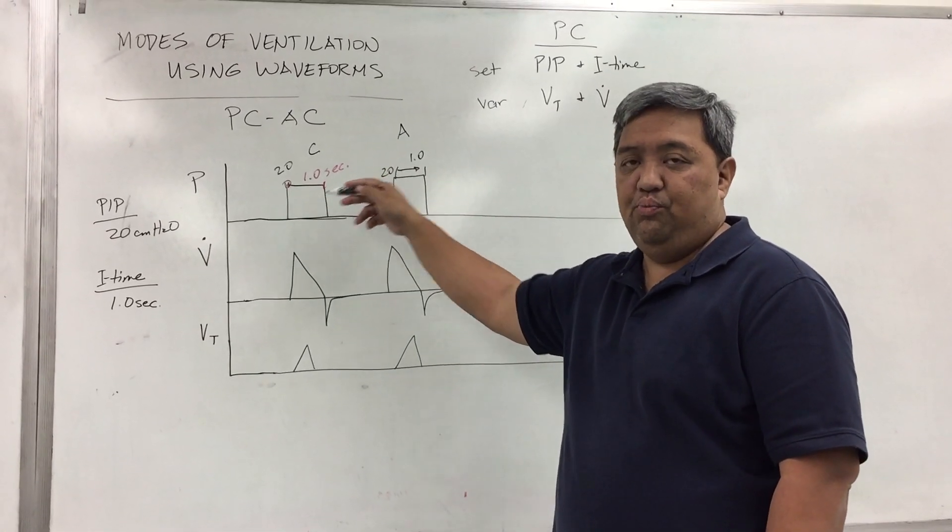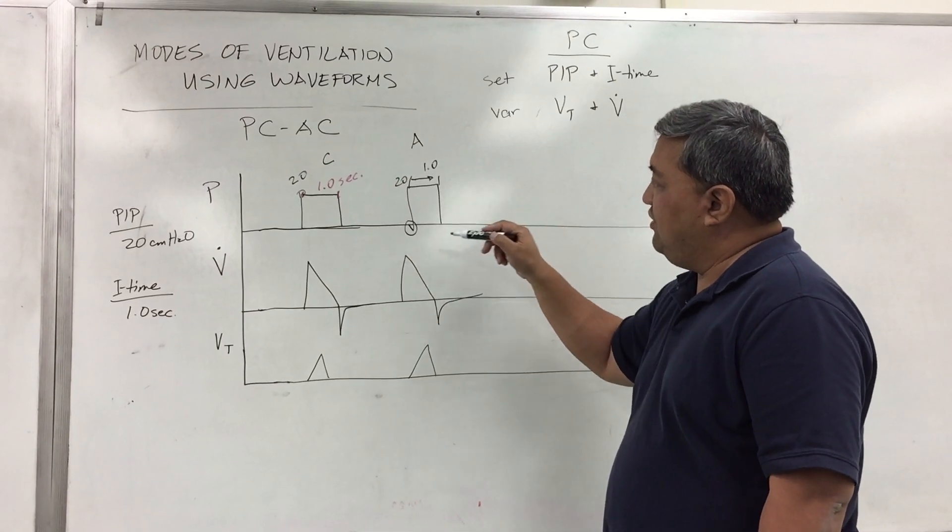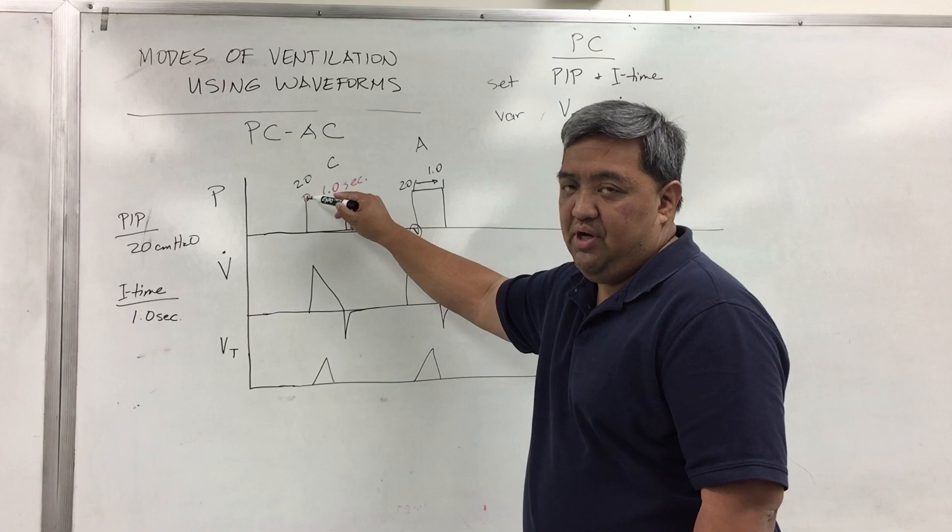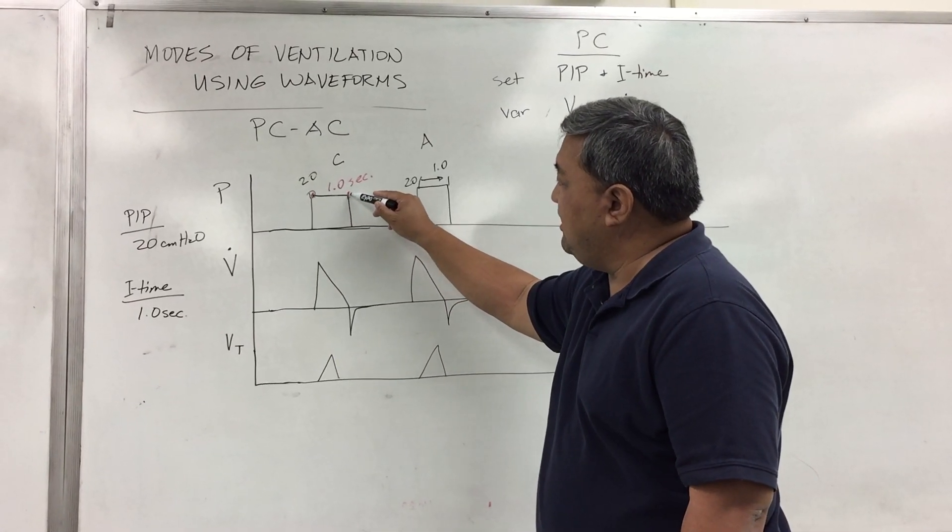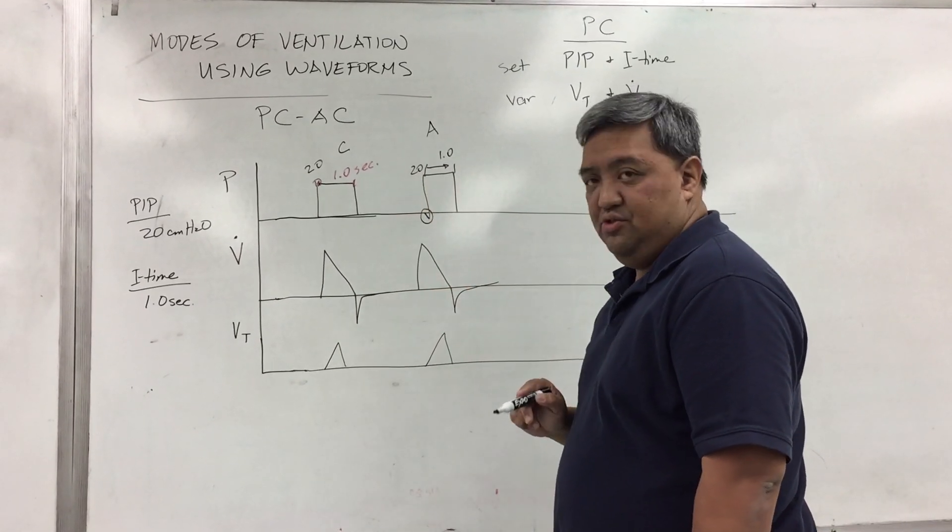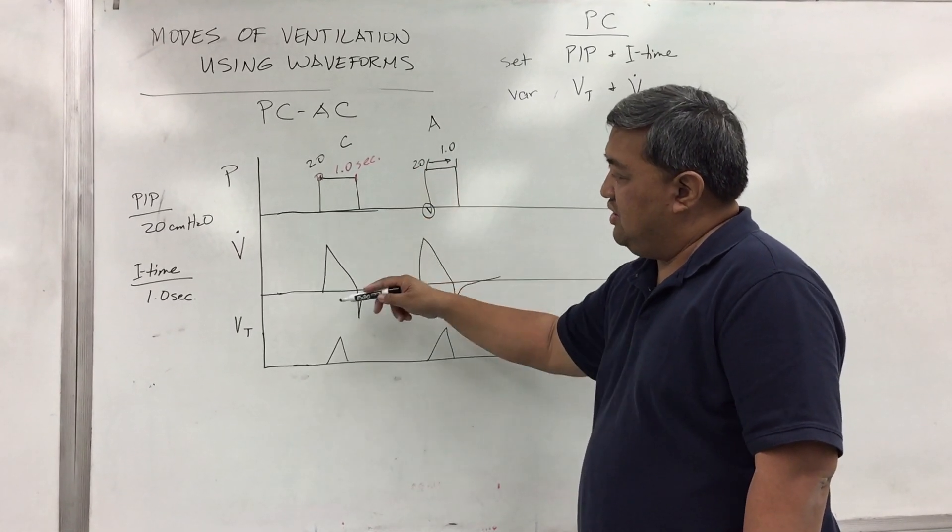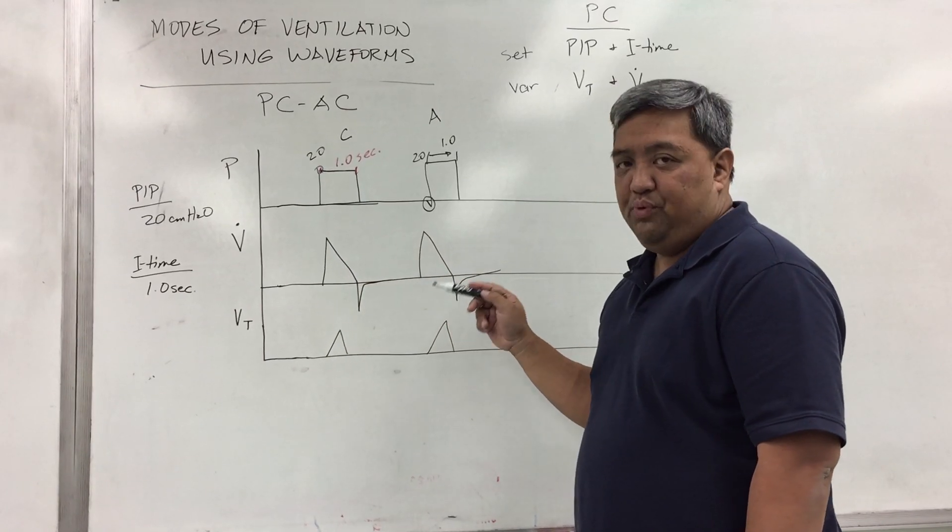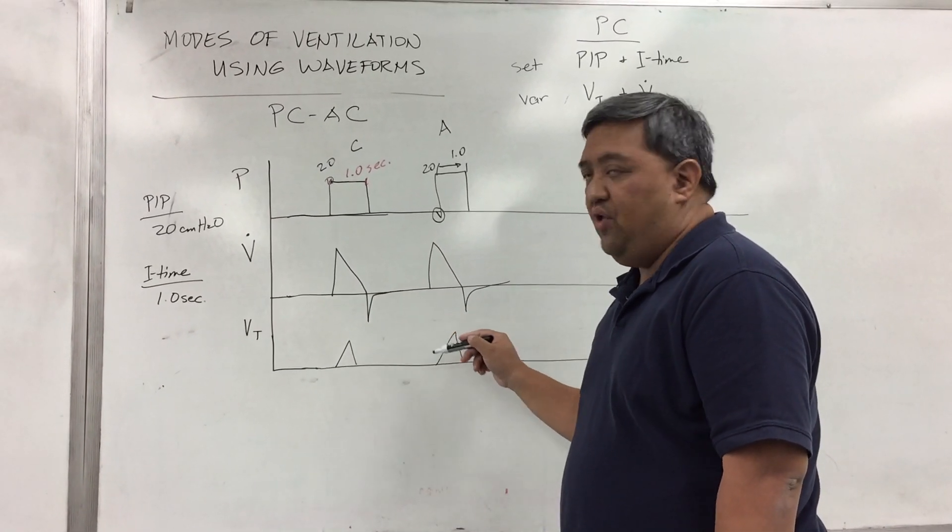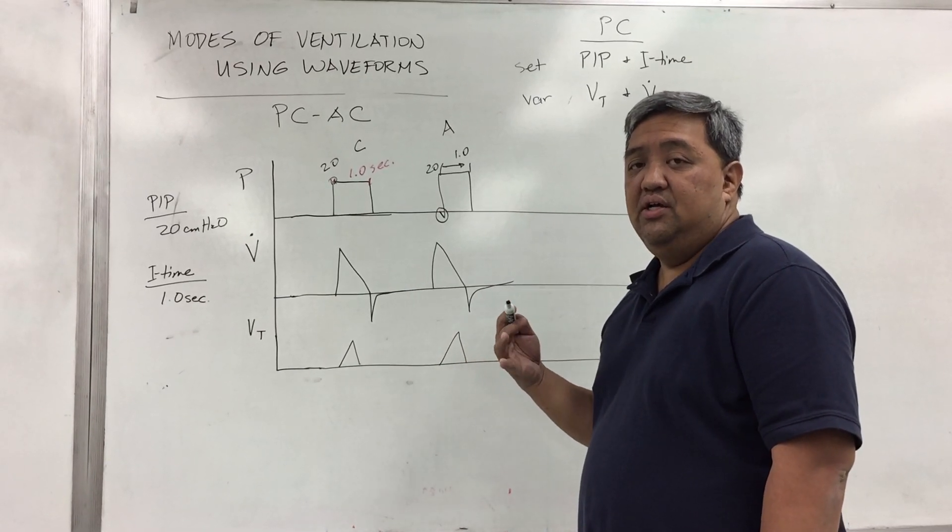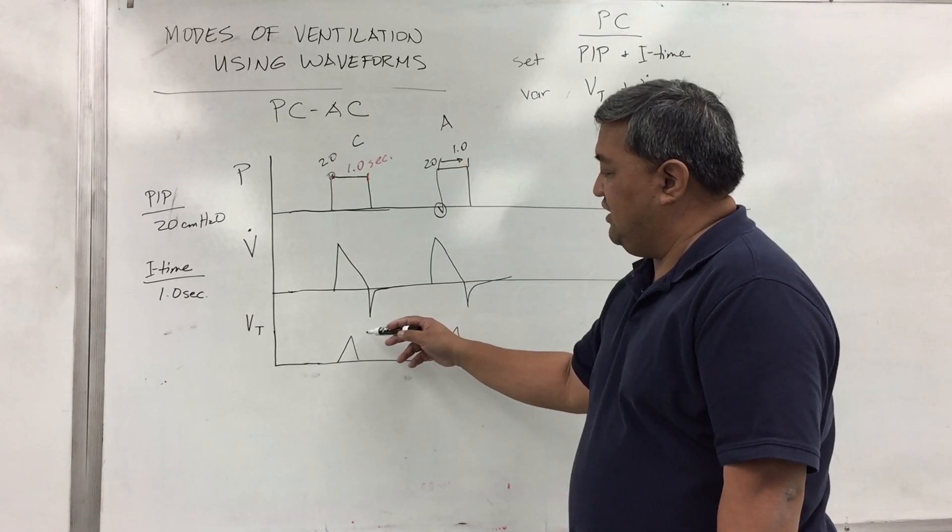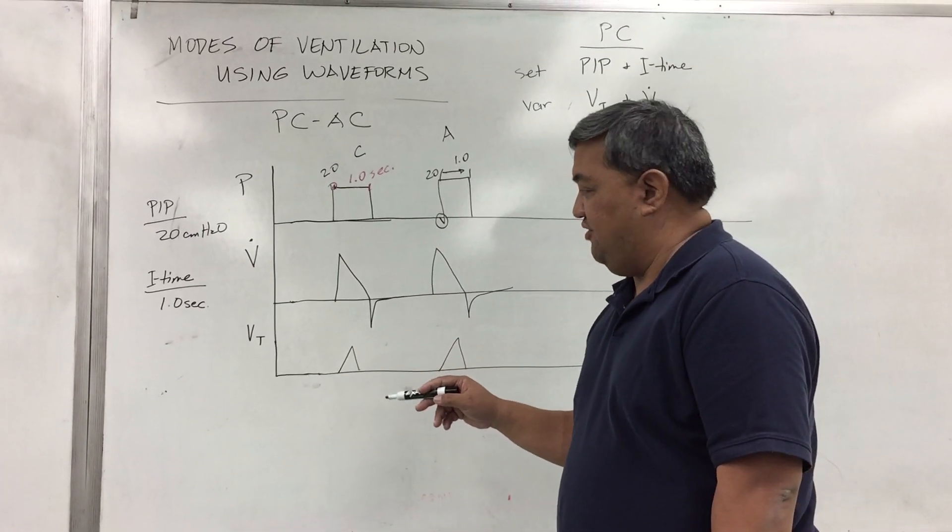This is where your peak inspiratory pressure is measured, staying consistent throughout the given time, and then it will go into exhalation. The flow waveform on pressure control is always descending or a ramp. The volume will vary depending on the patient's inspiratory effort, as well as the resistance and compliance of the patient.